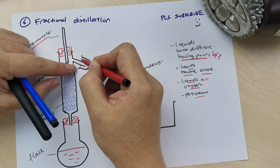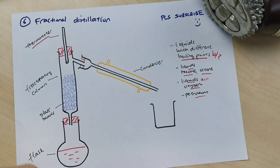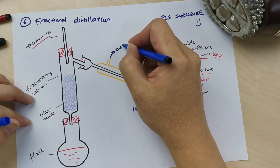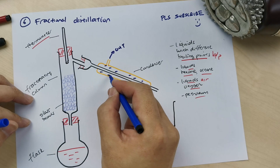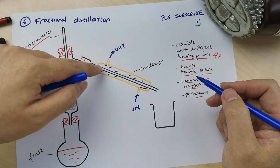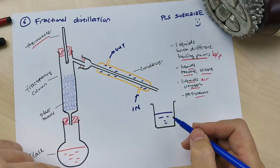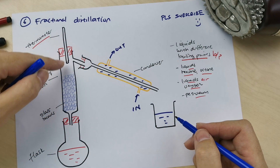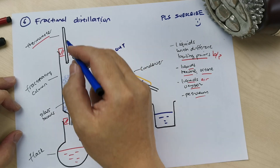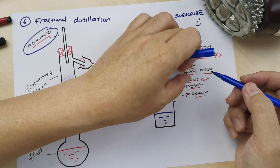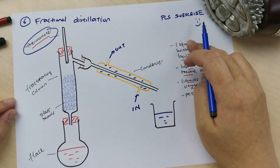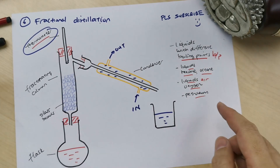Hexane vaporizes first, passes through the condenser (water in, water out to cool it), and is collected. Then you heat it up more and octane boils, vaporizes, and is collected separately. The thermometer tells you which component is coming over — at one temperature you collect hexane, at another temperature you collect octane. So fractional distillation separates liquids with different boiling points.